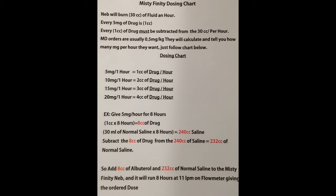So what you want to do next is add your eight cc's of albuterol and your 232 cc's of normal saline into the Mistyfinity neb. Turn the flow meter on at 11 liters, let it rock. You've given the proper dose.